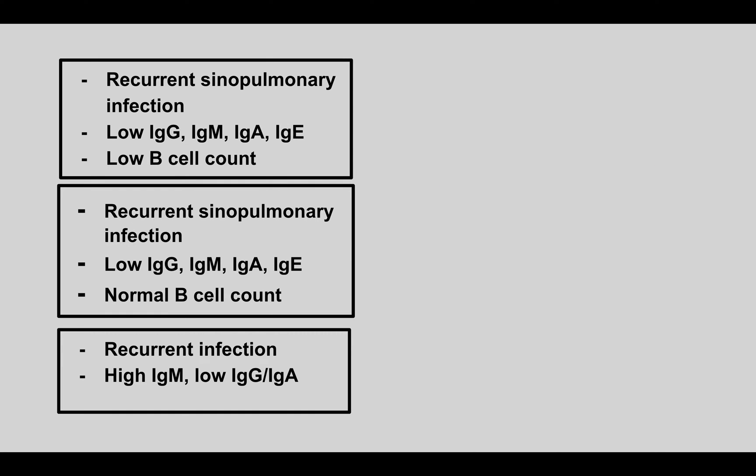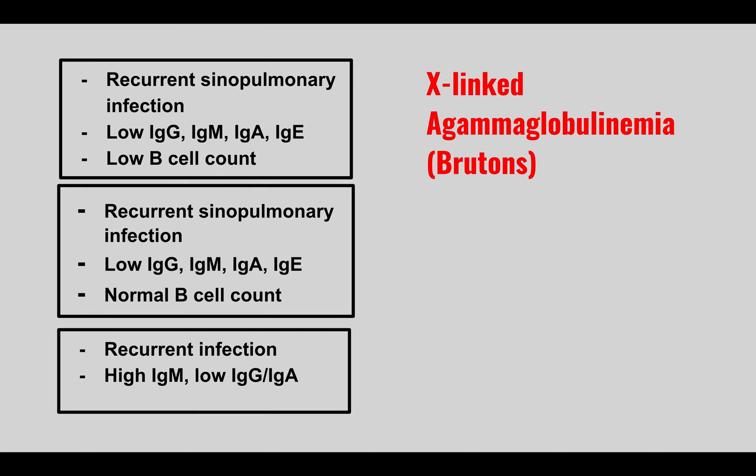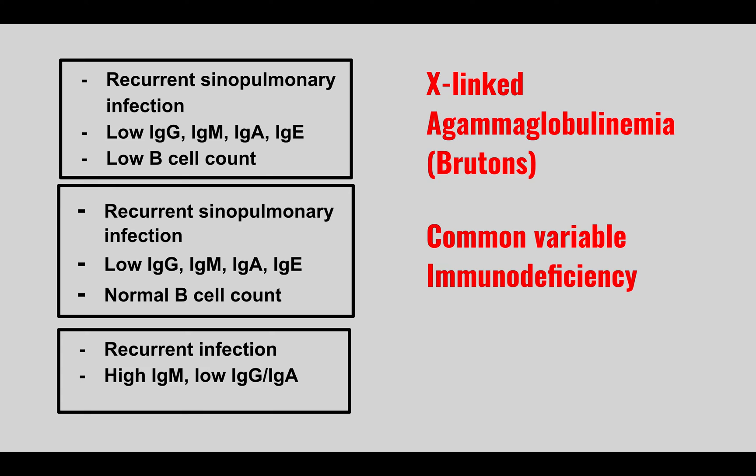The next section covers immunodeficiencies. Recurrent sinopulmonary infections with low IgG, IgM, IgA, IgE, and a low B cell count is X-linked agammaglobulinemia, also called Bruton's agammaglobulinemia. It's always tested alongside common variable immunodeficiency, which presents similarly with recurrent sinopulmonary infections and low immunoglobulins, but has a normal B cell count. Both have low immunoglobulins, but the normal B cell count distinguishes CVID.